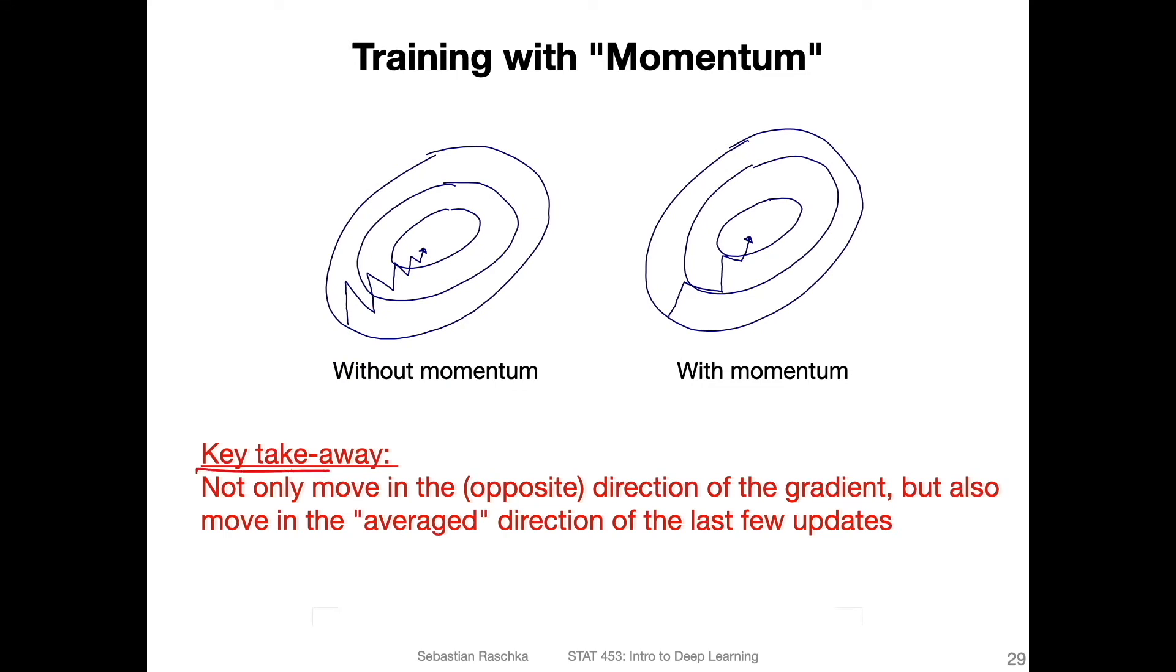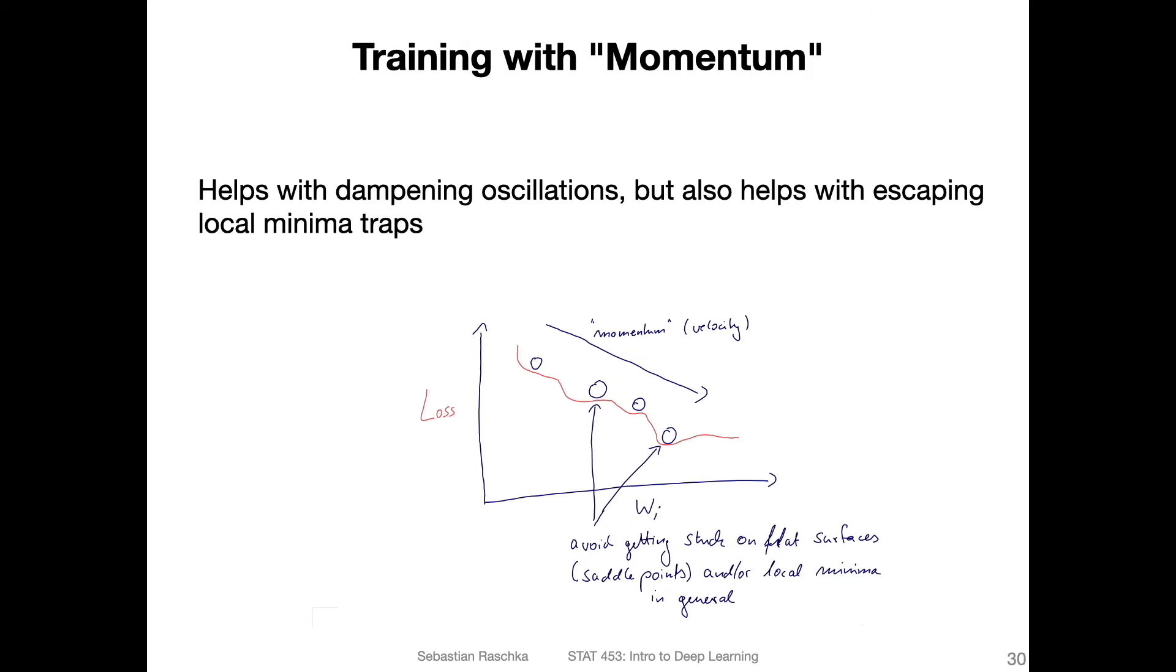The key takeaway is essentially this: in regular gradient descent, we usually move in the opposite direction of the gradient. But now with momentum, we also move in the averaged direction of the last few updates. We look into the average direction from the last updates essentially, that's our velocity. It helps with dampening the oscillations, but it can also help us jump out of local minima.